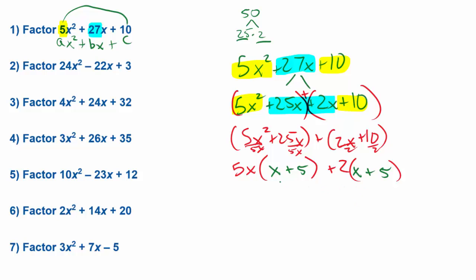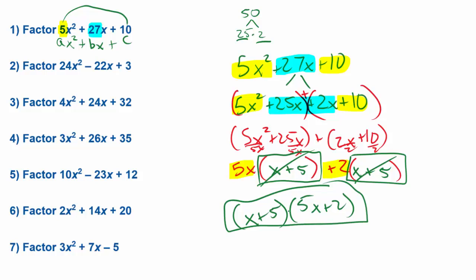And now if you notice, this is almost like a GCF. This whole x plus 5 is what these two things have in common. So if I were to pull the x plus 5 out of both of these and divide each of these terms by x plus 5, if I pulled the x plus 5 out, I'd be left with the 5x plus 2. And that is going to be our final factored answer.